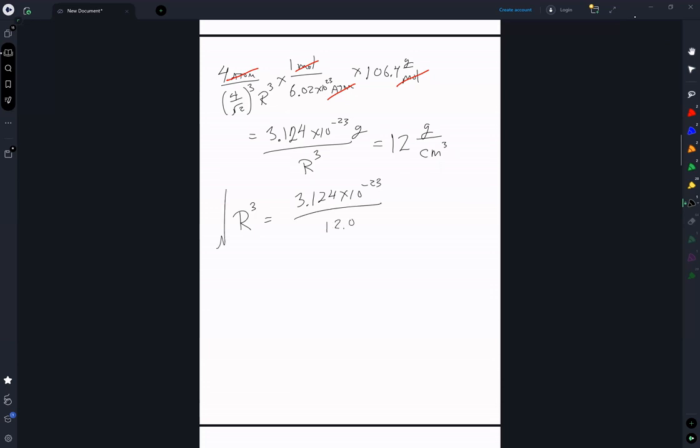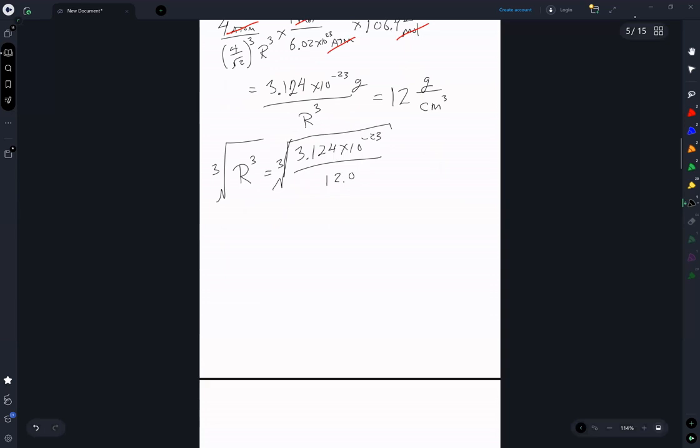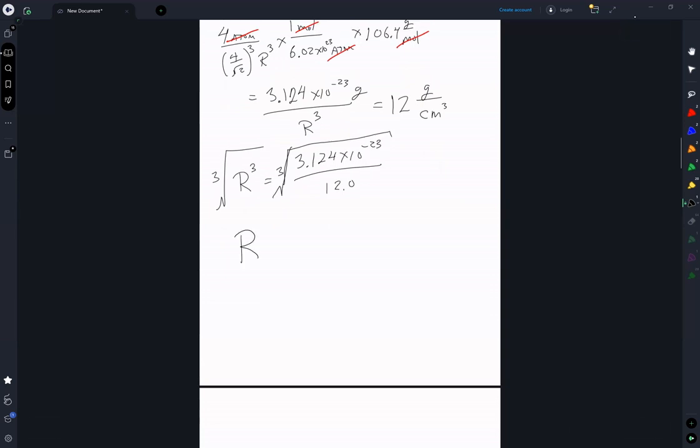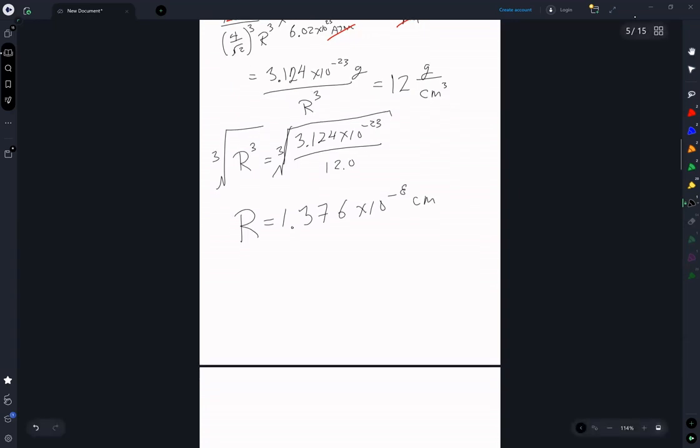So we get, setting this equal to 12.0 and taking the cube root, R is equal to 1.376 times 10 to the minus 8 centimeter, or 1.37 times 10 to the minus 10 meter, which is 1.37 angstrom.